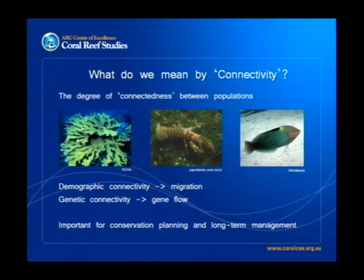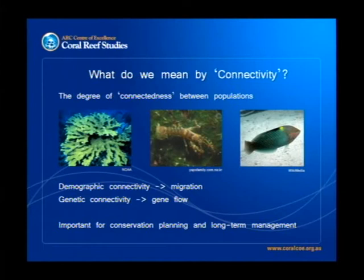One way of looking at connectivity is it's the degree of connectedness between populations — a wonderfully unhelpful description, but really that's what it's about. We say we have a population A. What is its relationship with population B? Is it unidirectional, bidirectional? To what extent does something that takes place in one population influence what happens in the other? This can be for both beneficial effects, such as spillover from coral reef fish populations, or negative effects like disease or invasive species.